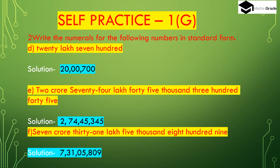Part (d): 20 lakh 700. In the lakh place the number is 20 (two zero). In the thousands place there is no digit so we place zero zero. In the hundreds place: 700 (seven zero zero). So the number in standard form is 20,00,700.